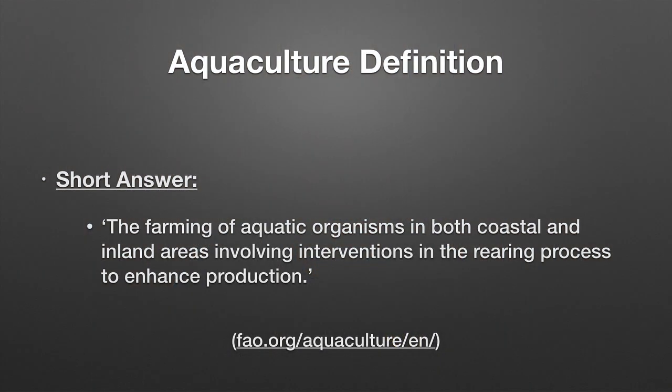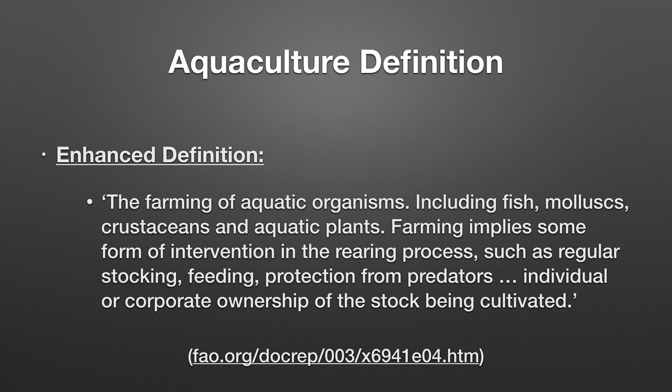A short definition of aquaculture, as Gage mentioned, is the farming of aquatic organisms. We can extend it to: the farming of aquatic organisms in both coastal and inland areas involving interventions in the rearing process to enhance production. The FAO's expanded definition states that aquaculture is the farming of aquatic organisms including fish, mollusks, crustaceans, and aquatic plants. Farming implies interventions such as regular stocking, feeding, protection from predators, and individual or corporate ownership of the stock being cultivated.